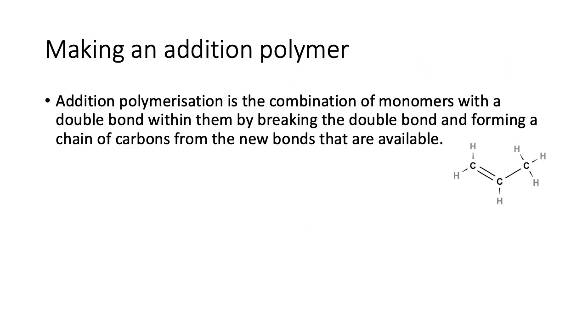So what's an addition polymer? Addition polymerization is a combination of a monomer with a double bond within them by breaking the double bond and forming a chain of carbons from the new bonds that are available.